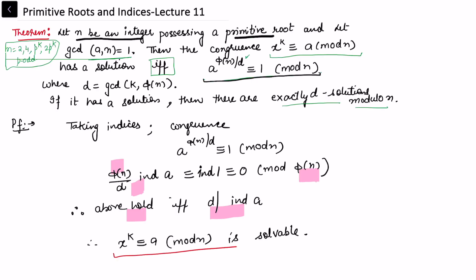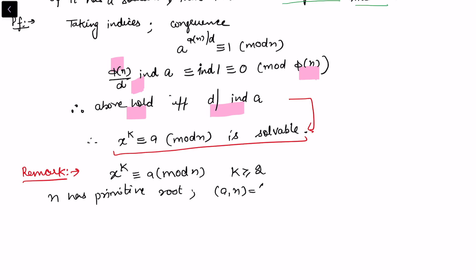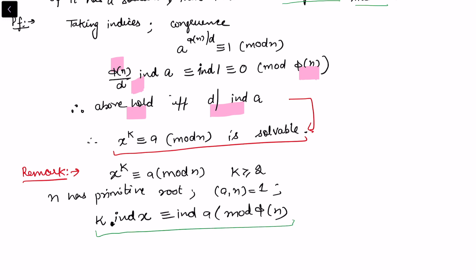To justify that last remark, we note that if we want to solve x^k ≡ a (mod n) with k ≥ 2, and n has a primitive root with gcd(a, n) = 1, then by the definition of indices we can write: k · ind(x) ≡ ind(a) (mod φ(n)). This looks like a linear congruence, where k is a coefficient, ind(x) is the variable, and ind(a) is the right-hand side.